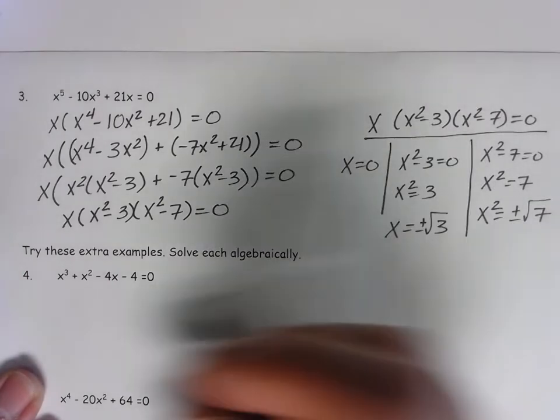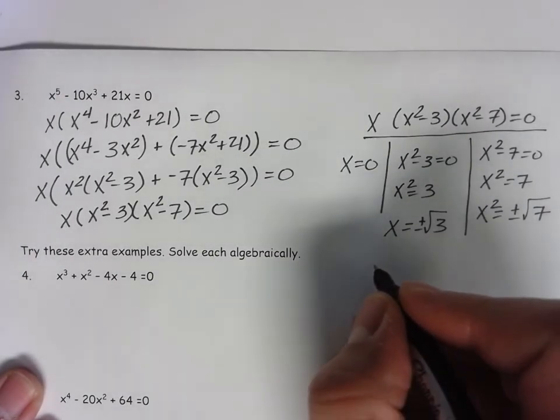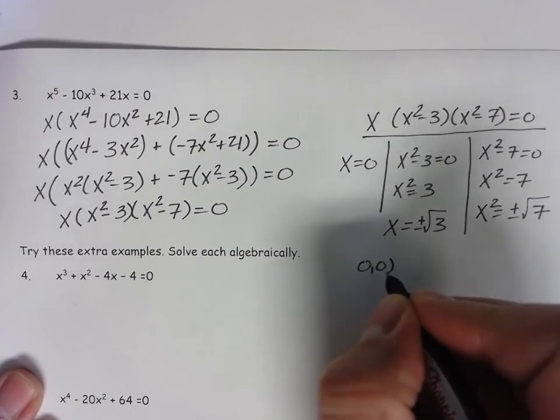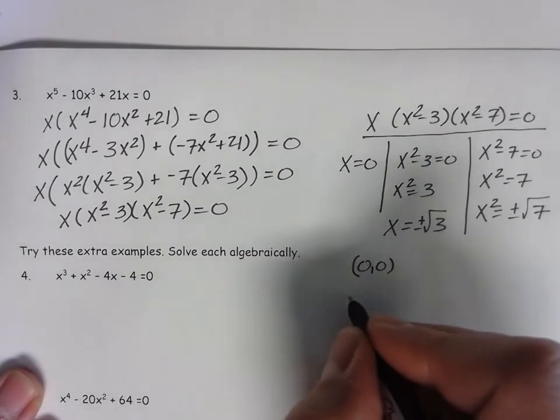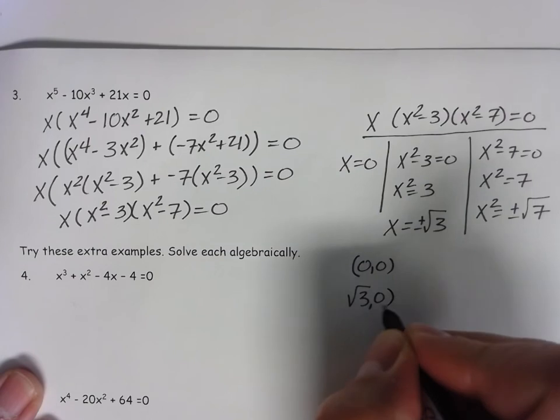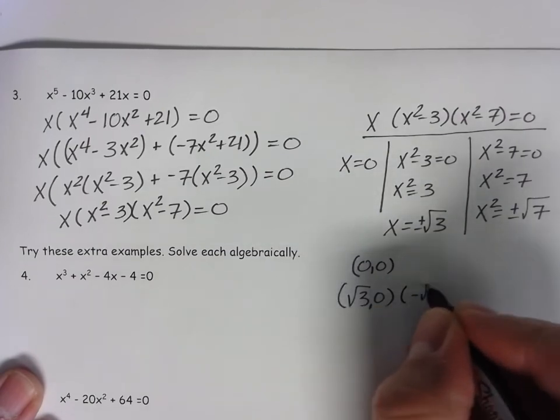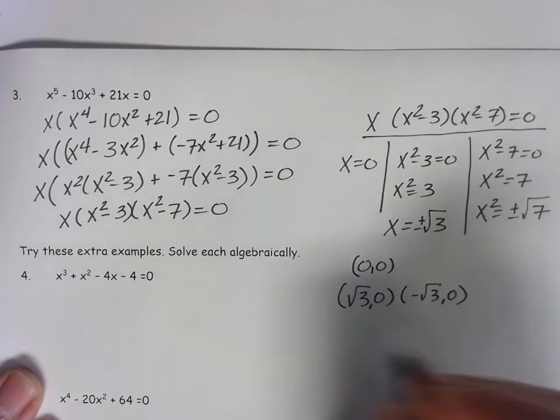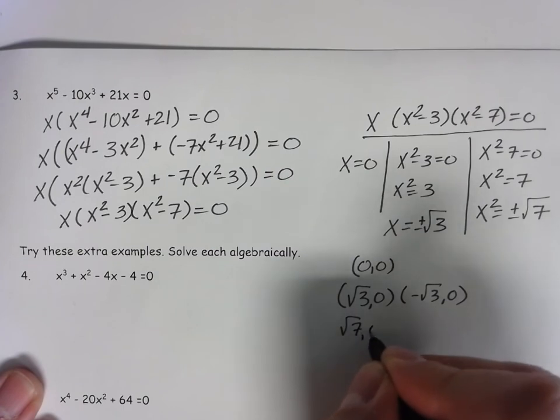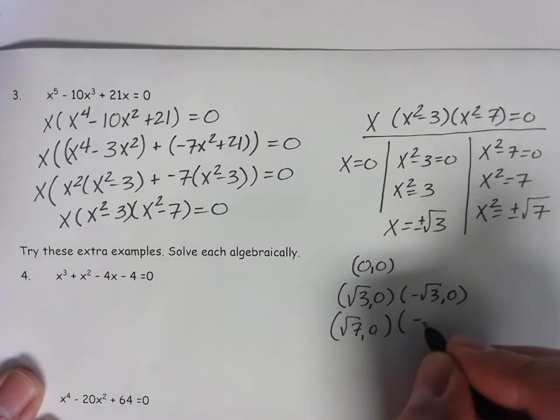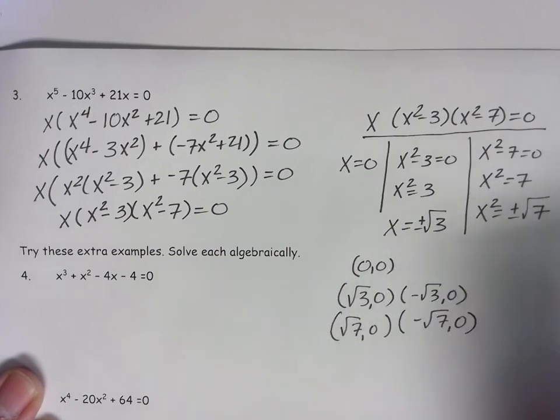For our roots, of course, our points become 0, 0, the origin. Radical 3, 0. Negative radical 3, 0. Radical 7, 0. Negative radical 7, 0. There are your points.